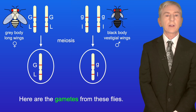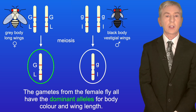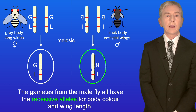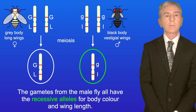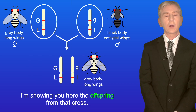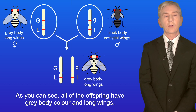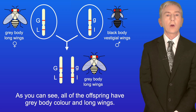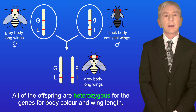Here are the gametes from these flies. The gametes from the female fly all have the dominant alleles for body colour and wing length, and the gametes from the male fly all have the recessive alleles for body colour and wing length. All of the offspring have grey body colour and long wings, and all of the offspring are heterozygous for the genes for body colour and wing length.